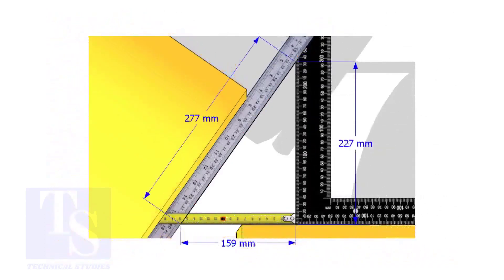Assume that these are the dimensions. Let us calculate the including angle. If you apply the sine rule, the angle will be 159 divided by 277, shift sign.